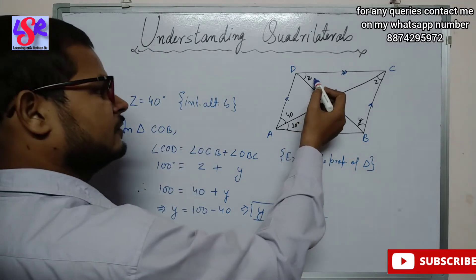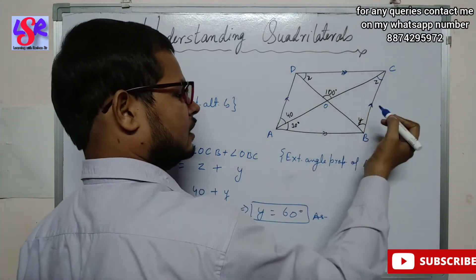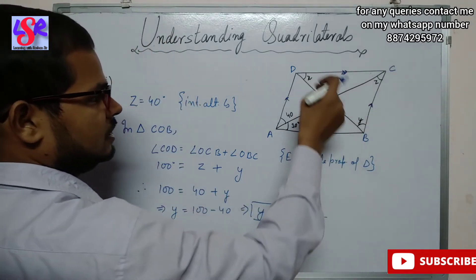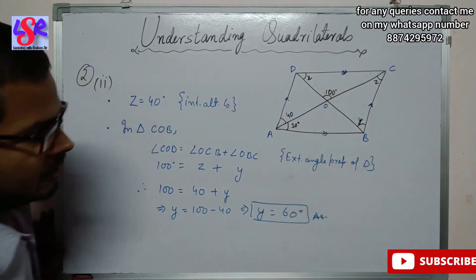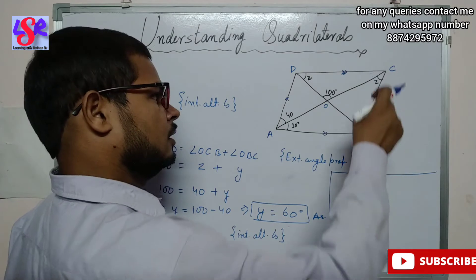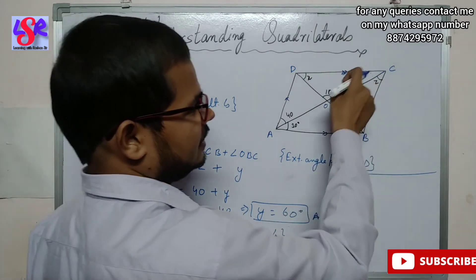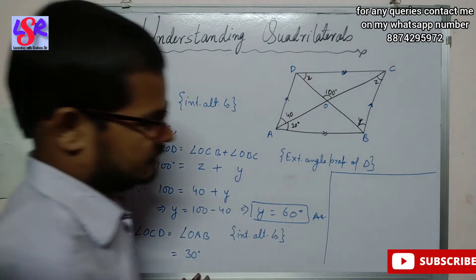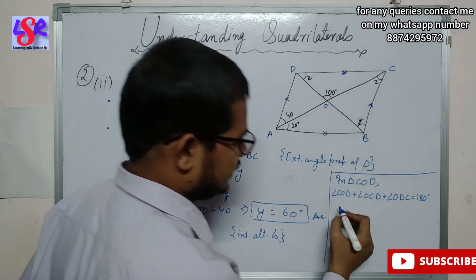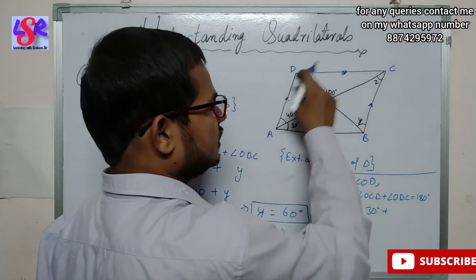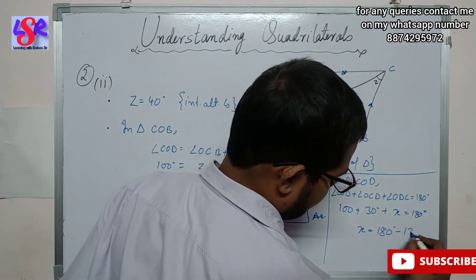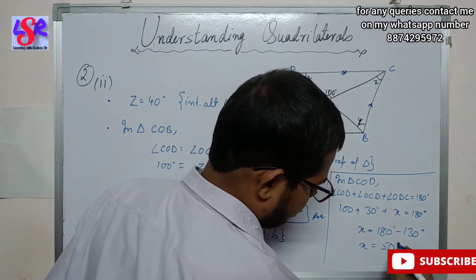Next we find X. The angle OCD equals angle OAB as interior alternate angles (since the sides are parallel), so angle OCD equals 30 degrees. In triangle COD, using the angle sum property: angle COD plus OCD plus ODC equals 180 degrees. With COD as 100 degrees, OCD as 30 degrees, and ODC as X: X equals 180 minus 130, so X equals 50 degrees.